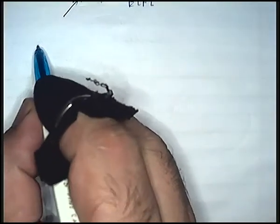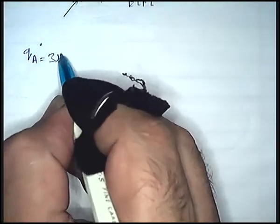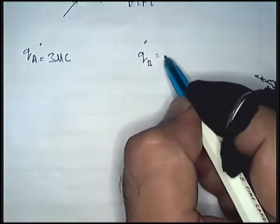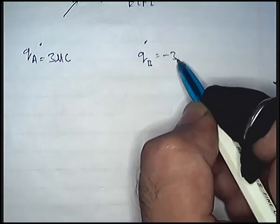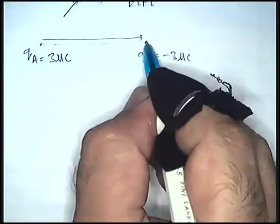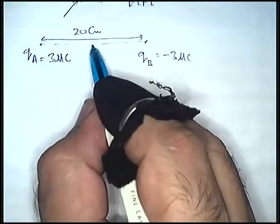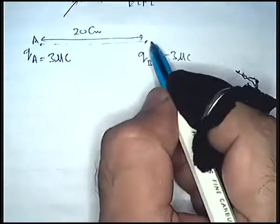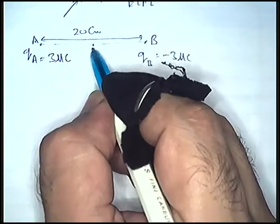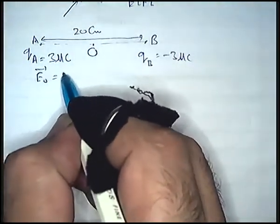There are two point charges: QA equals 3 µC and QB equals minus 3 µC, separated by a distance of 20 cm. O is the midpoint of line AB. We need to find the electric field at point O.